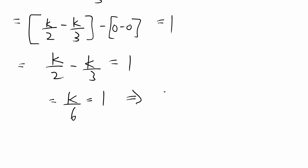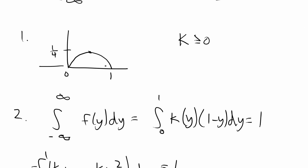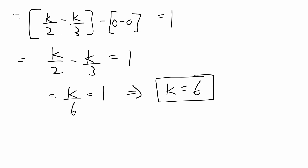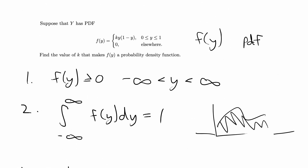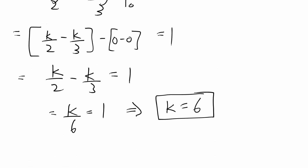Solving for k gives us k equals 6. Since 6 is greater than 0, our first condition is met — f of y is greater than or equal to 0 over the entire range of y. And our second condition is met when k equals 6, because the integral over the entire range equals 1. So our final answer is k equals 6.